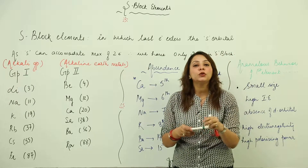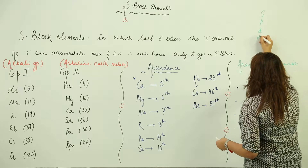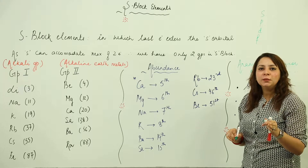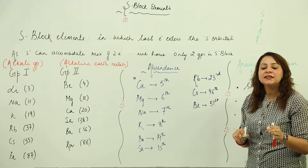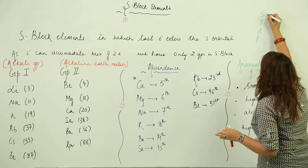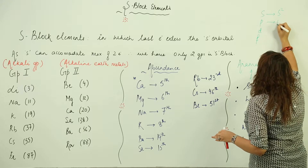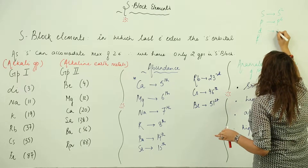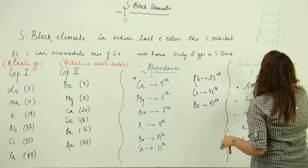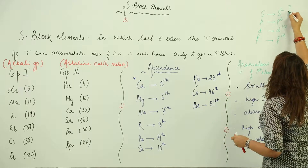As already mentioned, we have four blocks: s, p, d, and f. The maximum number of electrons each can accommodate determines the number of elements in that group. The s orbital can accommodate a maximum of 2 electrons, p can accommodate a maximum of 6, d can accommodate a maximum of 10, and f can accommodate a maximum of 14.